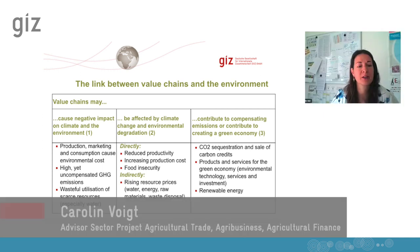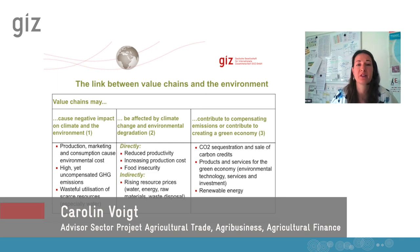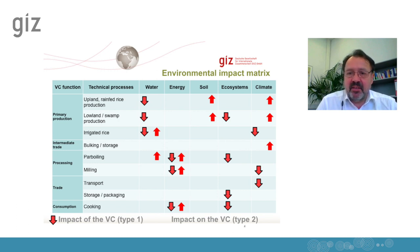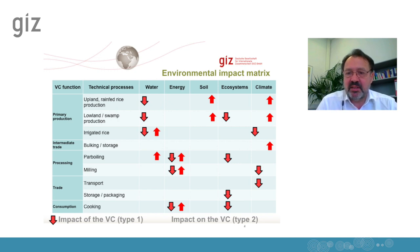Could you explain how you develop a conceptual model for environmental analysis? In all assessments, we would start from our value chain map. You would see here on the left side the value chain functions: primary production, intermediary trade, processing, trade and consumption.